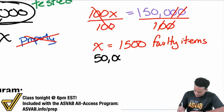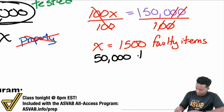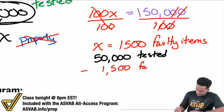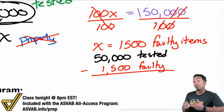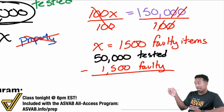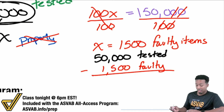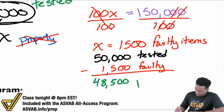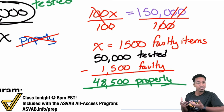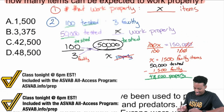So we have 50,000 that were tested. If we subtract the 1,500 that were faulty, we will get the number that works properly. This is why comparing the same things in the same way is so important — because even if you have the wrong setup, you can use it to your advantage and say, 'I can still use that number to get the right answer.' So subtract 1,500 from 50,000: subtract 1,000 first to get 49,000, then subtract 500 — that's 48,500. 48,500 work properly.